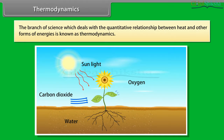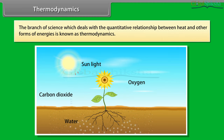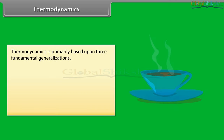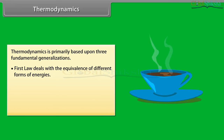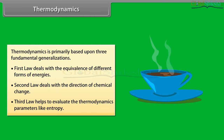Thermodynamics: the branch of science which deals with the quantitative relationship between heat and other forms of energies is known as thermodynamics. It is primarily based upon three fundamental generalizations: the first law deals with the equivalence of different forms of energies, the second law deals with the direction of chemical change, and the third law helps to evaluate thermodynamic parameters like entropy.